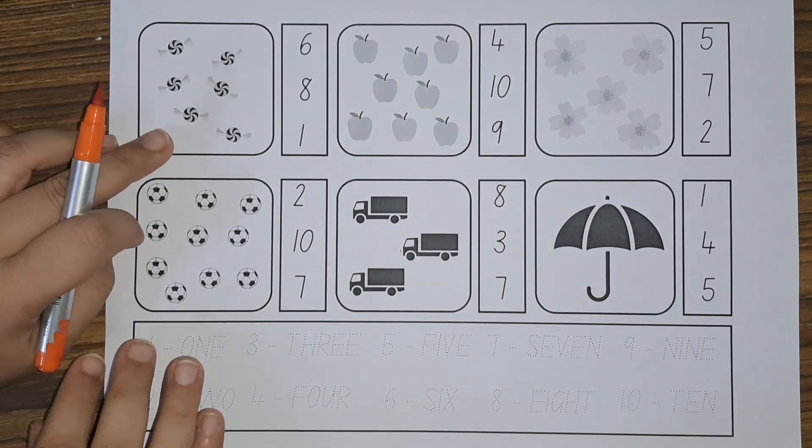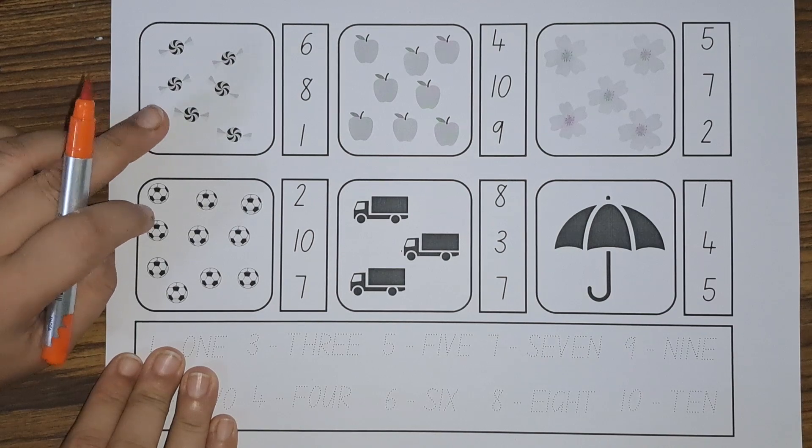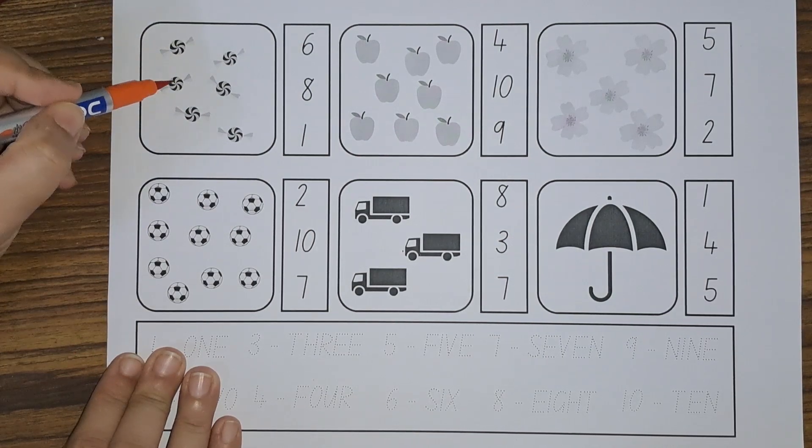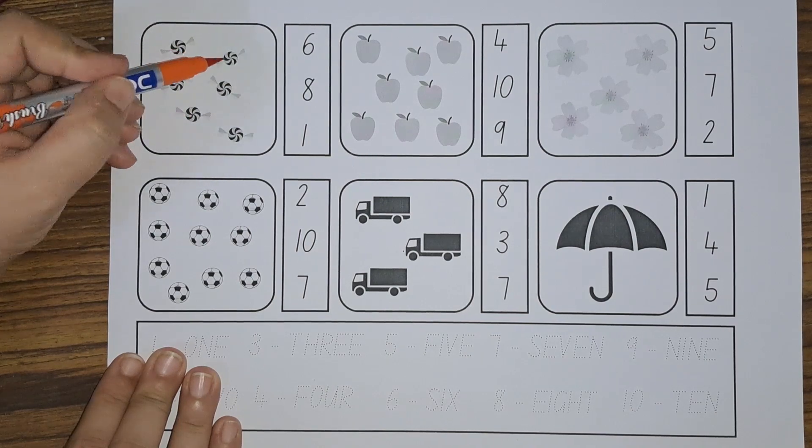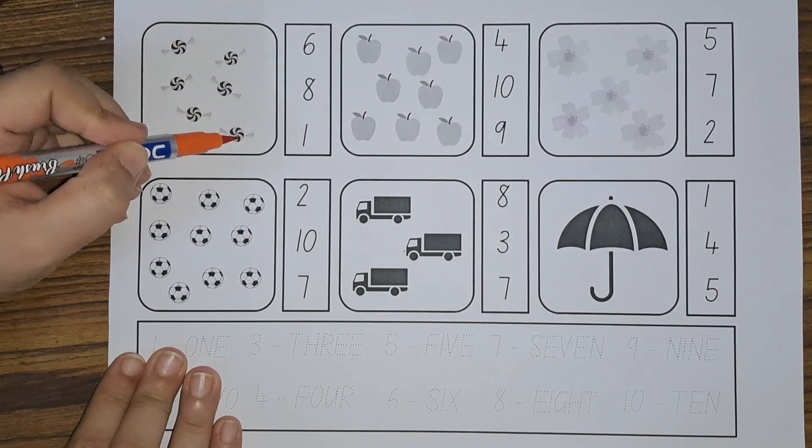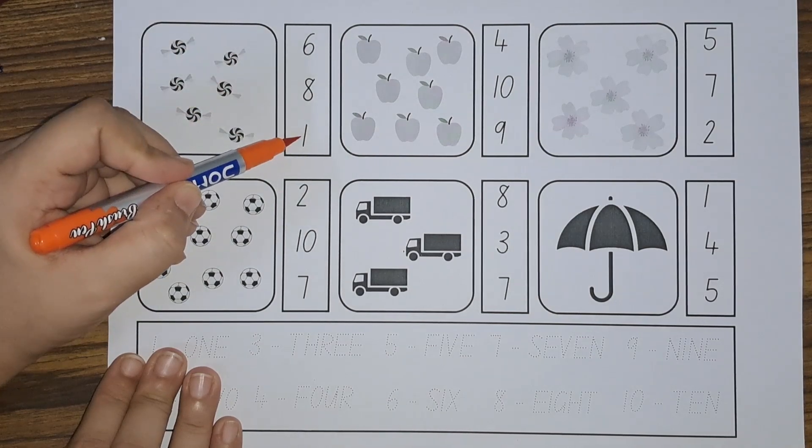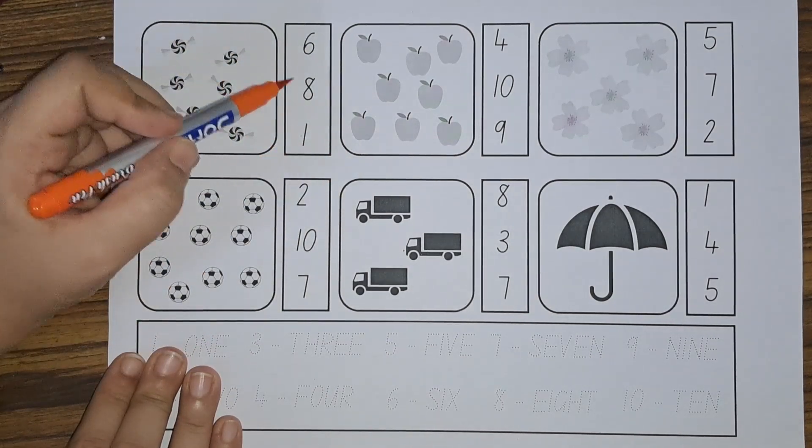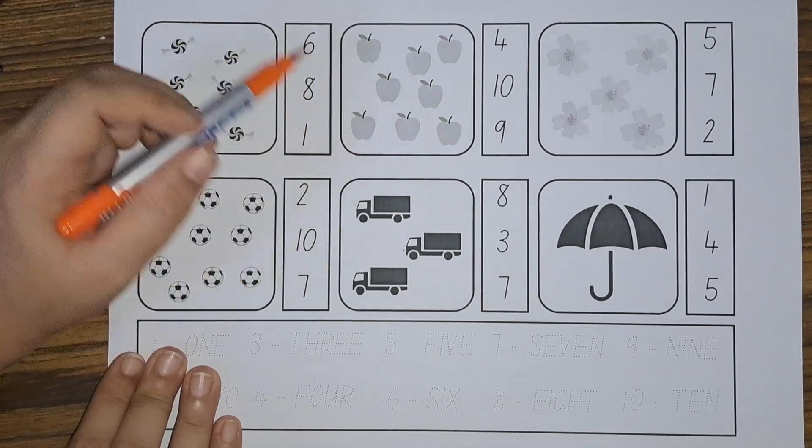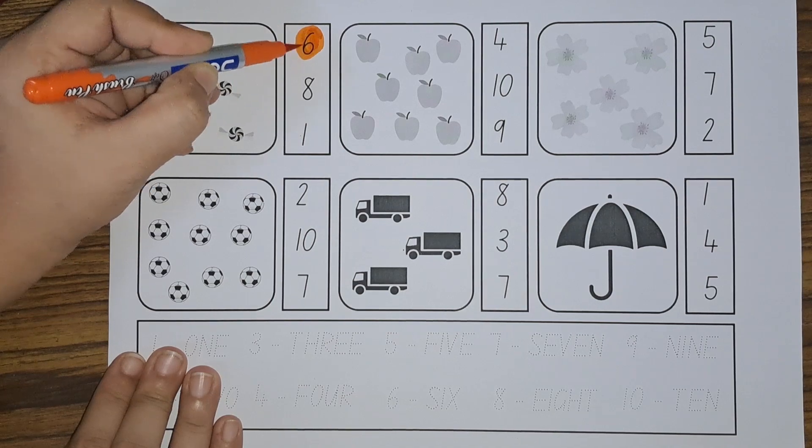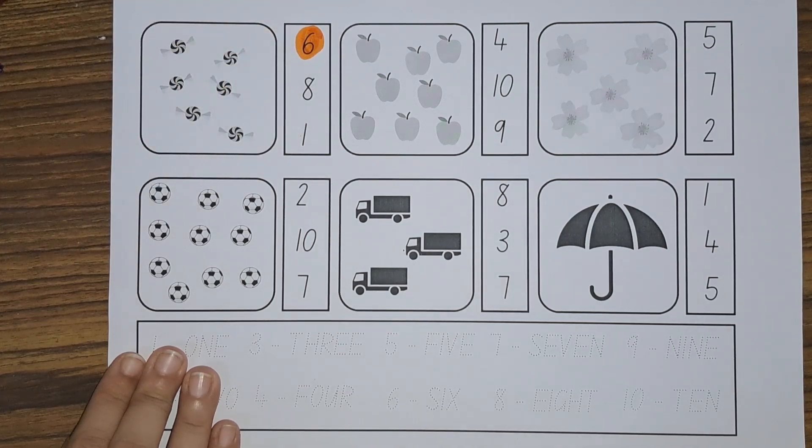Candy! Do you like candies? Let us count how many candies we have: one, two, three, four, five, six. Six candies. Is this six? No. Is this six? No. Is this six? Yes. Let us draw a circle.